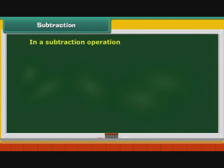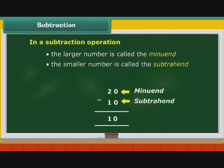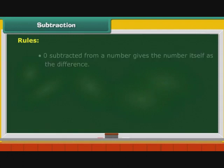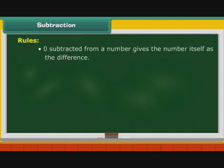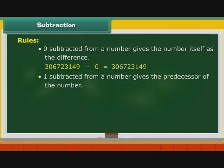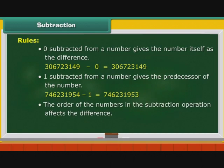Subtraction. In a subtraction operation, the larger number is called the minuend, the smaller number is called the subtrahend, and the result is called the difference. Let us look at the rules of subtraction. Zero subtracted from a number gives the number itself as the difference. For example, 306723149 − 0 = 306723149. One subtracted from a number gives the predecessor of the number. The order of the numbers in the subtraction operation affects the difference.